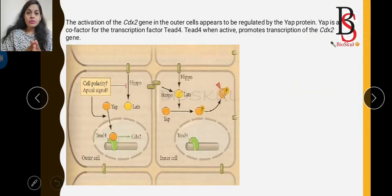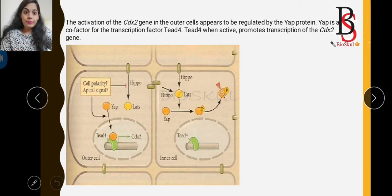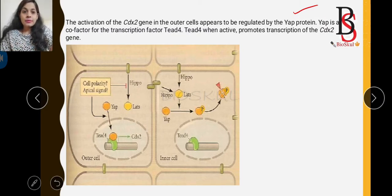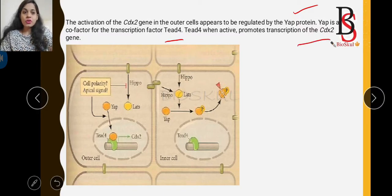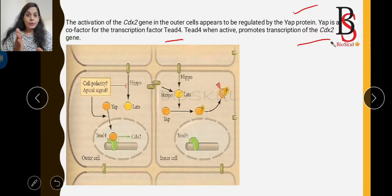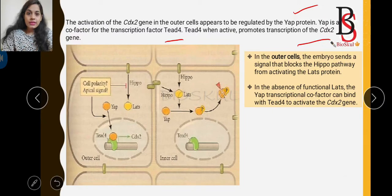How do the outer cells come to express CDX2? CDX2 gene expression in outer cells is regulated by a protein called the YAP protein. YAP acts as a co-factor for the transcription factor TEAD4. When TEAD4 is active, it promotes the transcription of the CDX2 gene. So in the outer shell, a signal blocks the Hippo pathway.